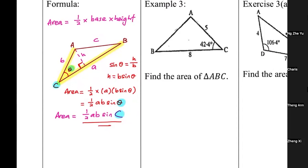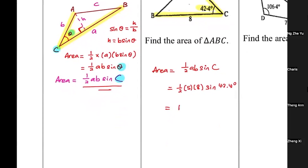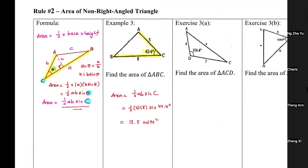For example, to find the area of this triangle, apply the formula: Area = ½ab sin C. You can see the two lengths cover the angle — the condition is fulfilled. So: Area = ½ × 5 × 8 × sin 42.4°. Press that into the calculator: ½ times 5 times 8 times sin 42.4°. You get an answer of 13.5 unit squared.